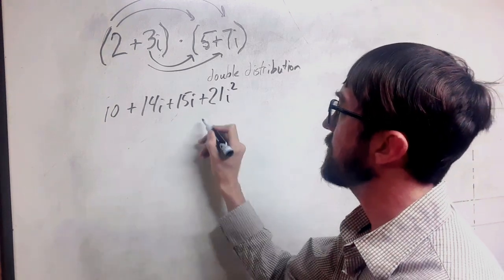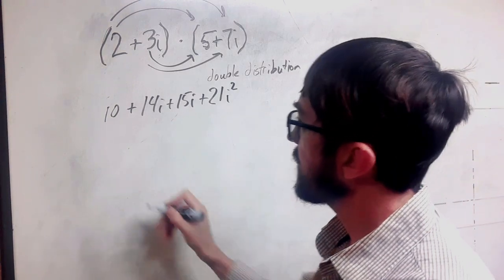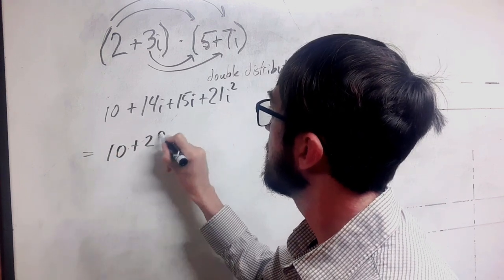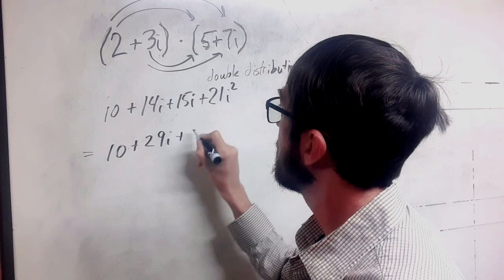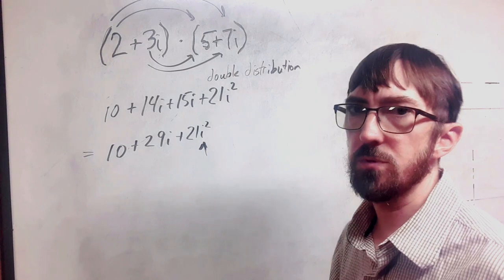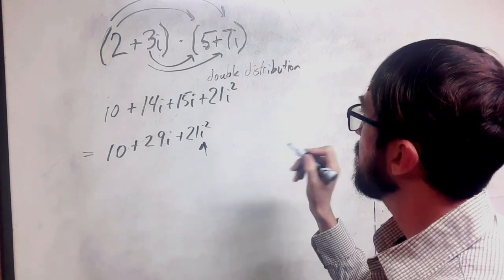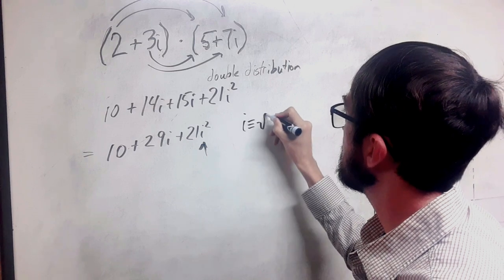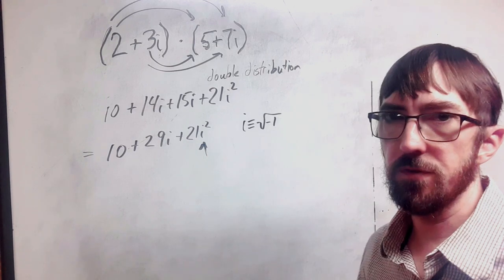Now, when we look at this, we have two like terms in the middle. We're going to bring those together. And then lastly, we need to address i squared. If you remember what the definition of i is, this is defined as the square root of negative 1.